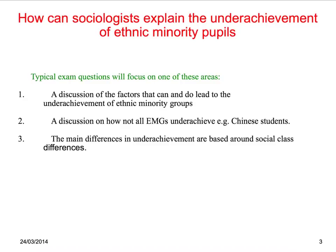Secondly, a discussion on how not all ethnic minority groups underachieve — your best example here will be Chinese students, and there is an article for you to read in class tomorrow on Chinese students. Finally, the main differences in underachievement are based around social class difference and not because of ethnic differences.